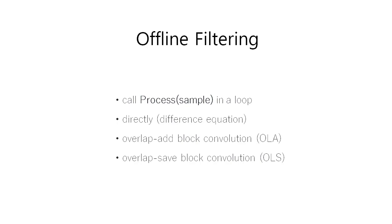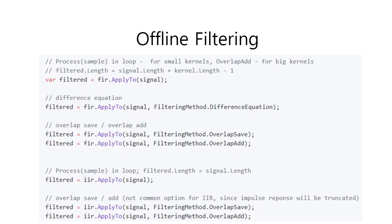The offline filtering can be carried out one of the following ways: process sample in a loop, directly apply a difference equation, and overlap add or overlap save block convolution. The second parameter in the corresponding method apply to is of type enum filtering method that defines such constants as auto, difference equation, overlap add, and overlap save. By default, the mode is set to auto, so n-waves will decide what method to use, depending on the filter type and kernel size. And most of the time, there is no need to tweak this parameter.